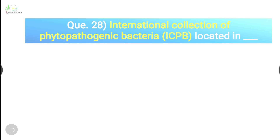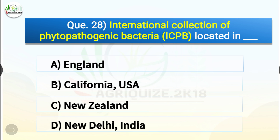Question number twenty-eight: International collection of phytopathogenic bacteria is located in dash. The options are England, California USA, New Zealand, or New Delhi India. The correct answer is option B, California, USA. International collection of phytopathogenic bacteria is located in California, USA.